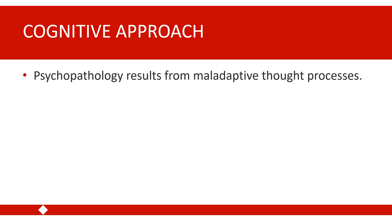According to the cognitive approach, psychopathology is viewed as resulting from maladaptive thought processes or patterns in the ways that people think about events that they experience. One way of understanding the cognitive approach is to think about the ABCs of behavior — the relationship between events that people experience, the way that they feel about those events, and the behaviors that they engage in in response to those events, with beliefs playing an important role in that process.